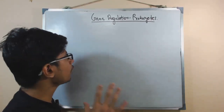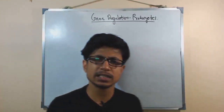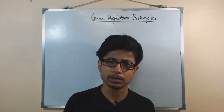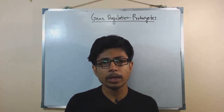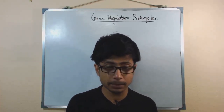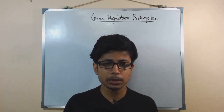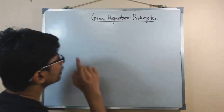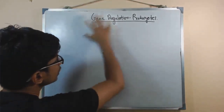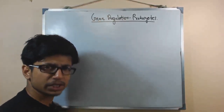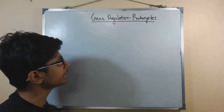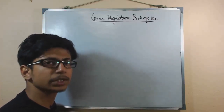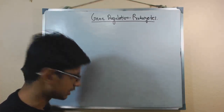Prokaryotic gene regulation is very simple — it's not as complicated as eukaryotic gene regulation. To understand prokaryotic gene regulation, you need to know some basic features of the gene structure of prokaryotes. The idea behind gene regulation is that we want to control the expression of certain genes.